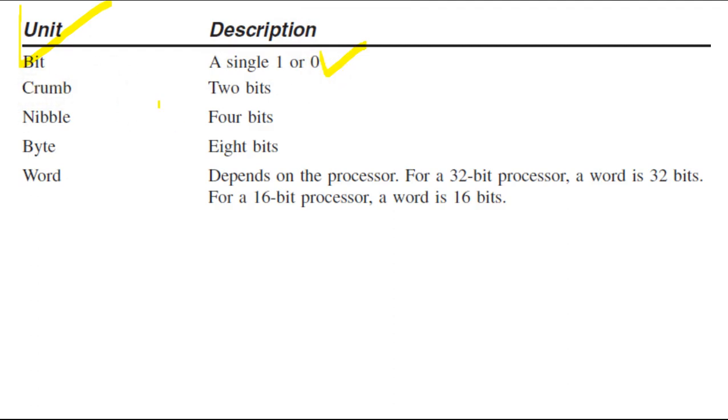Nibble is four bits and byte is eight bits. And then word - it depends on the processor. For a 32-bit processor, a word is 32 bits. For a 16-bit processor, a word is 16 bits.